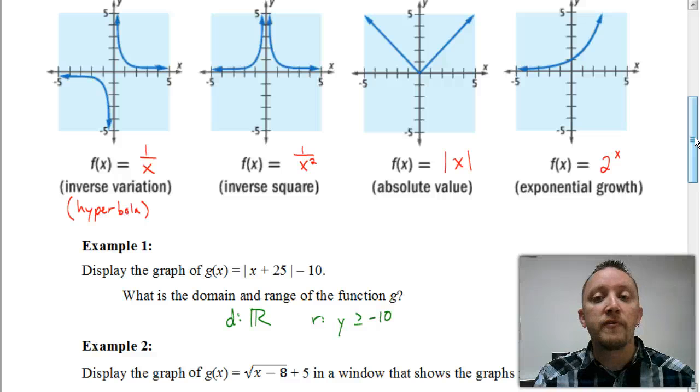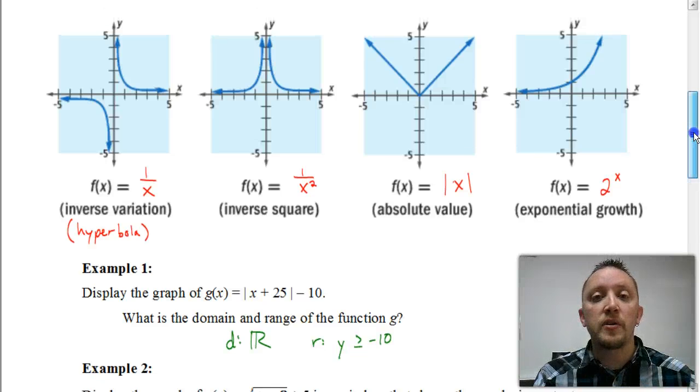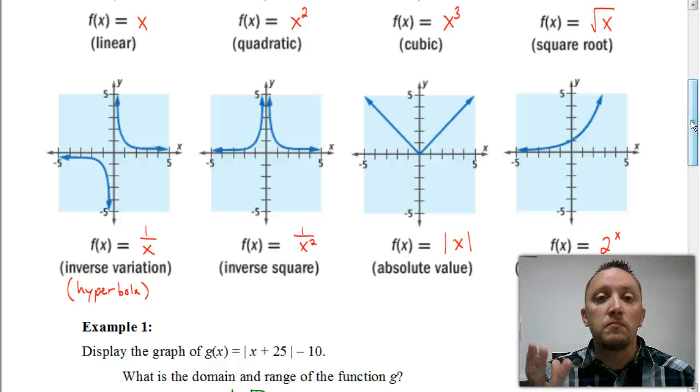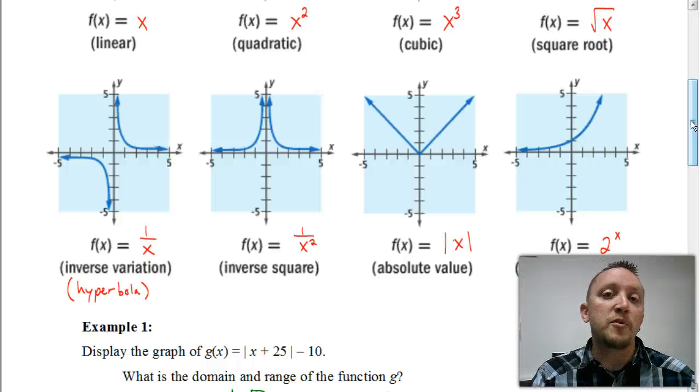Now, something else to make note of here for these functions is that the domain for all of these is going to be all real numbers, with the exception of a couple of different parent functions. So all of these, if I just scroll up a little bit here, you can see that I could take y = x, I could put any number I want in there for x, I can square any number, I could cube any number. And then going down here, which you can't really see, because the video might be covering it up, but we have the absolute value of x, I could take the absolute value of any function, and I could also take 2 to any exponent. So all of those would be all real numbers for the domain.